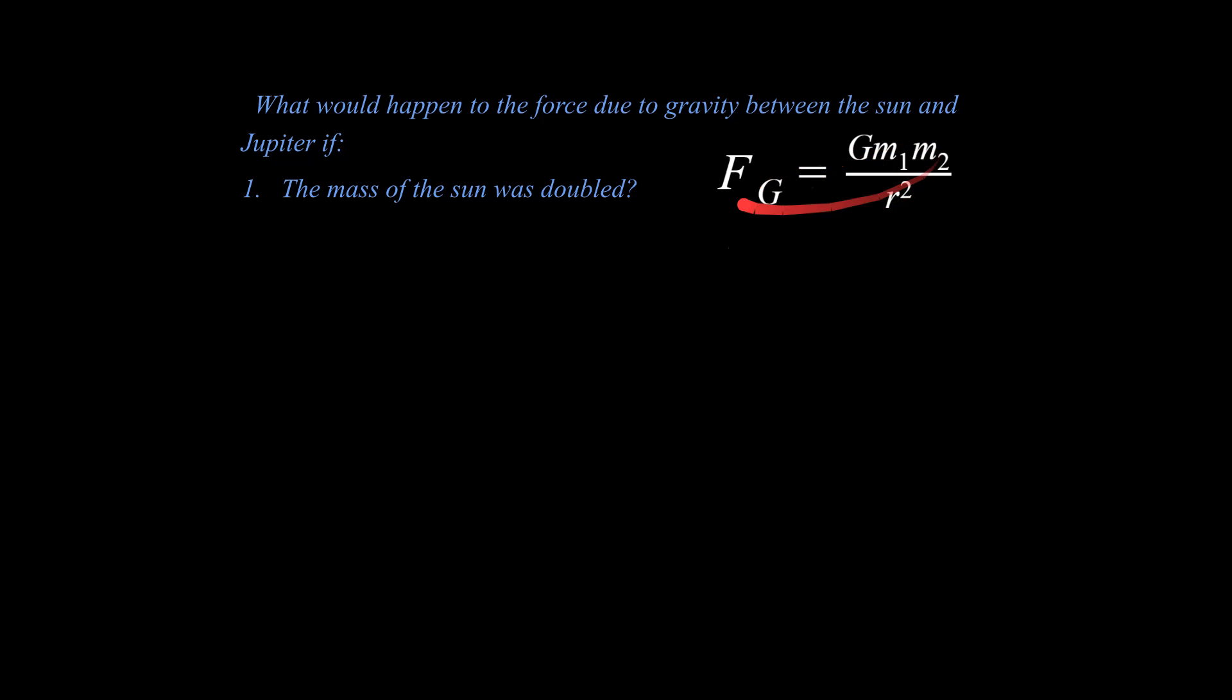This is our overall equation. Let's go back to our original question. What would happen to the force due to gravity between the sun and Jupiter if the mass of the sun was doubled? Let's work through our strategies. We can write our original equation. We can ignore this constant G. This G is going to drop out because I'm going to compare my A example with my B example in just a minute. I'm going to use 10 for all of these terms.